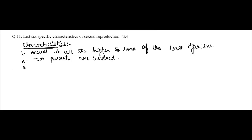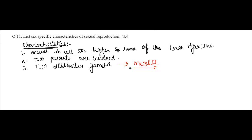Next, in sexual reproduction two dissimilar gametes are formed — that is, male gamete and female gamete. During gamete formation, meiosis occurs. Meiosis is a special type of cell division where it reduces the number of chromosomes to half, so the gametes carry only half the number of chromosomes.